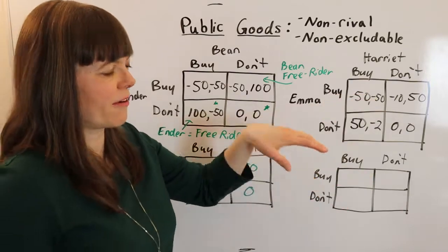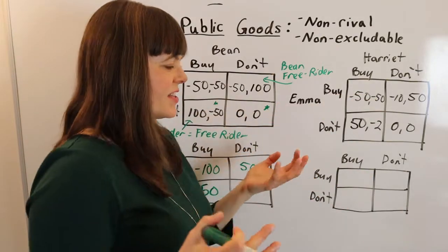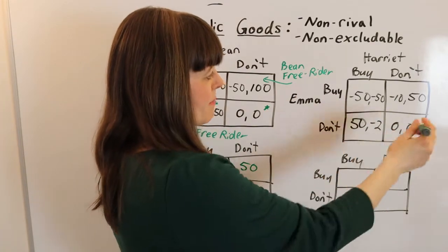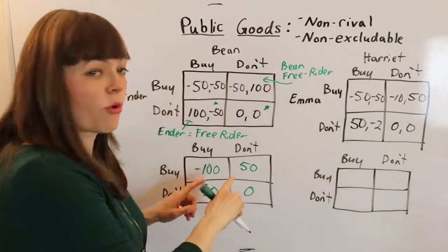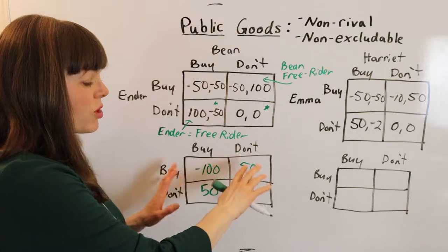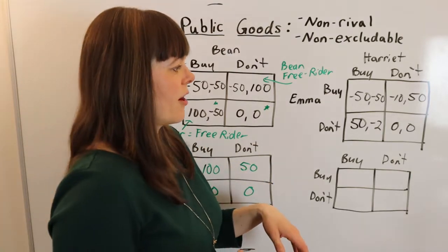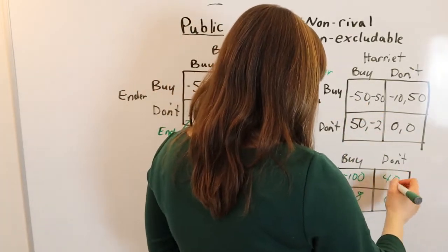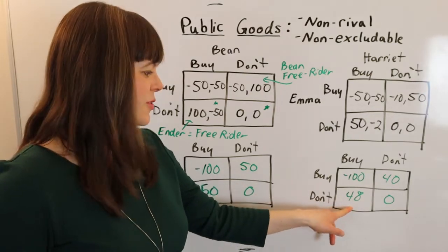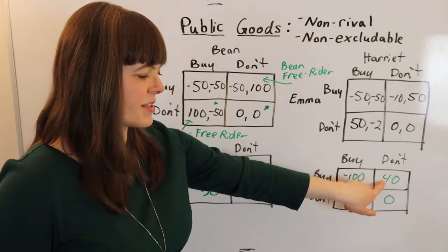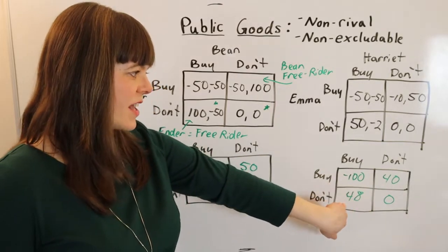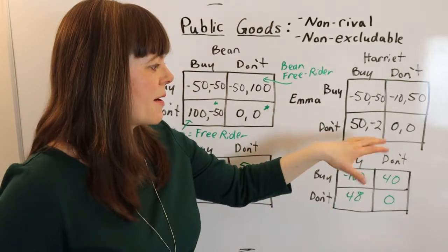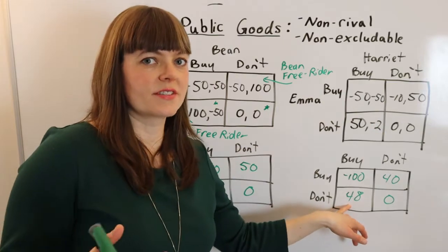We could also have a situation where one roommate gets a discount on the TV and they have different utilities for watching it, so the payoffs are not symmetric. In that case, it's even more useful to compute social welfare to figure out which box has the highest value and solve the free rider problem. Here the maximum possible social welfare is 48 given the asymmetries, so it's best if Harriet buys the TV with her employee discount and Emma pays Harriet to divide up that social welfare.